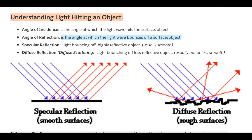The angle of bouncing off — the angle of reflection — is shown in red. Specular reflection is light bouncing off a highly reflective, smooth object. Diffuse reflection, or diffuse scattering, is light bouncing off a less reflective, less smooth object. As you can see, the angle of incidence is fine, but the angle of reflection turns into a diffuse reflection or scattering because the surface isn't as smooth.